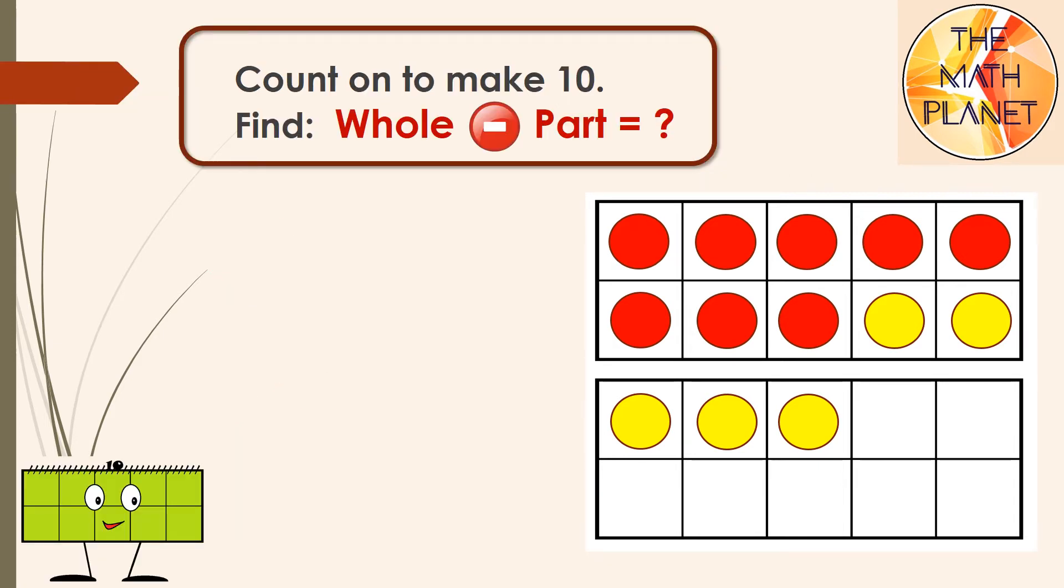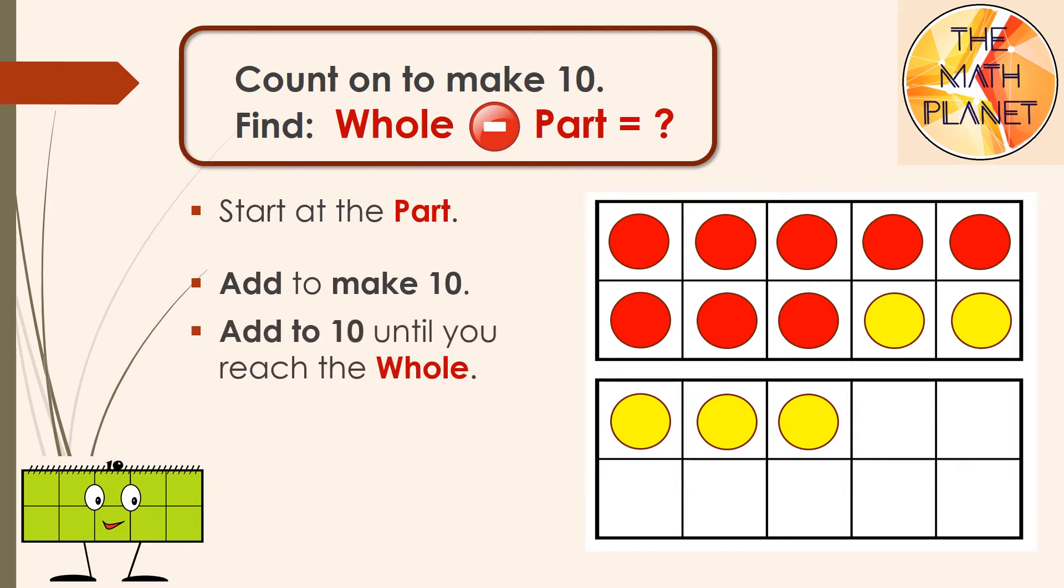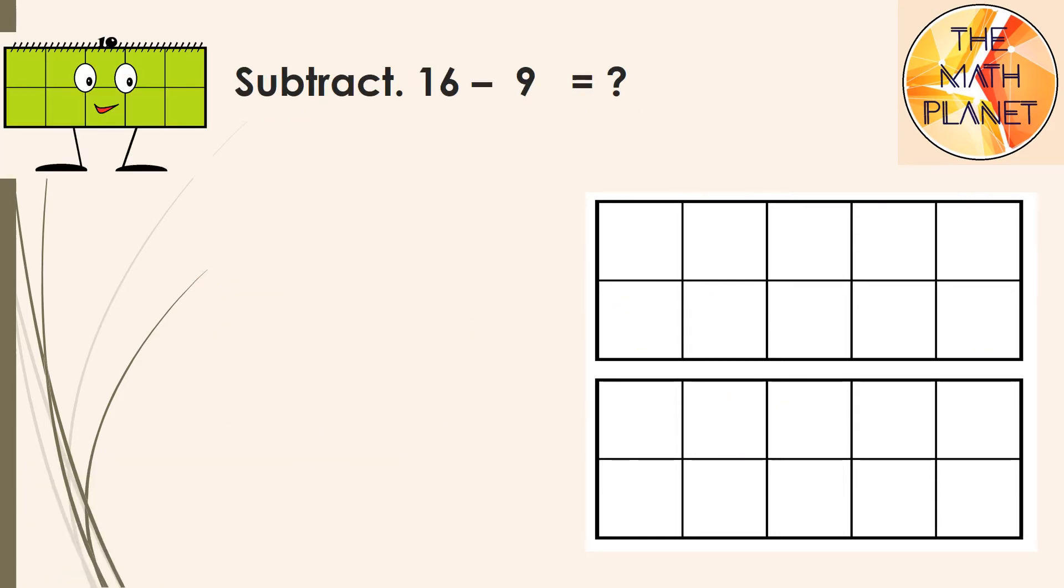So, in order to count on to make 10, the steps are as follows. I will start at the part, which is the number after the minus sign in the subtraction equation. Then, I will add to make 10. Next, I will add to 10 until I reach the whole, which is the first number in the subtraction equation. Finally, the number of counters that I add will be the difference or the answer to my subtraction equation.